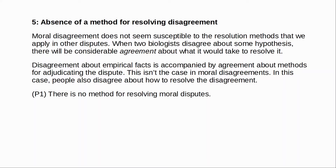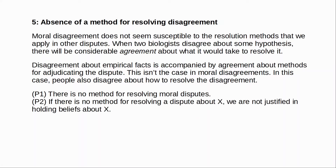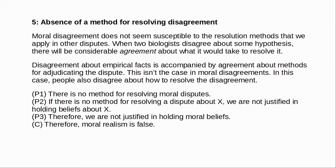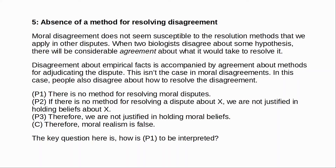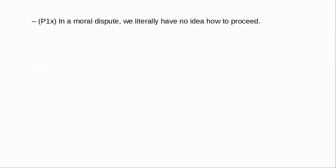The key question here is how exactly we are to interpret premise one — the claim that there is no method for resolving moral disputes. Enoch considers several possibilities. First, we might take premise one to mean that there is literally no method for resolving moral disputes — that when we have a moral dispute, we literally have no idea how to proceed. If that were true, it's understandable why that might challenge realism. The problem is that it's obviously false. People do engage in moral arguments and there are a variety of methods that they employ.